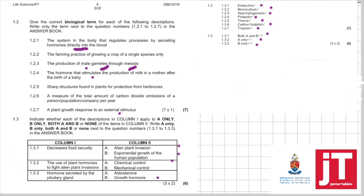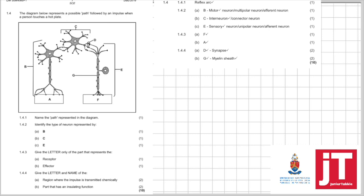1.3.3. The hormone secreted by the pituitary gland? Well, you should know here aldosterone is secreted by the adrenal gland and it is the growth hormone that is only secreted by the pituitary gland. So your answer here is B only. This was fairly okay to answer, not too difficult. Right. Let's go down to question 1.4. 1.4. The diagram below represents a possible path followed by an impulse when a person touches a hot plate. 1.4.1. Name the path represented by the diagram. So this whole diagram here represents a path. So they want to know what's that path. And whenever they mention the word path, that answer can only be the reflex arc.